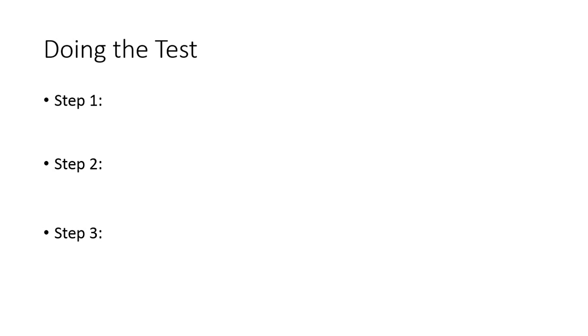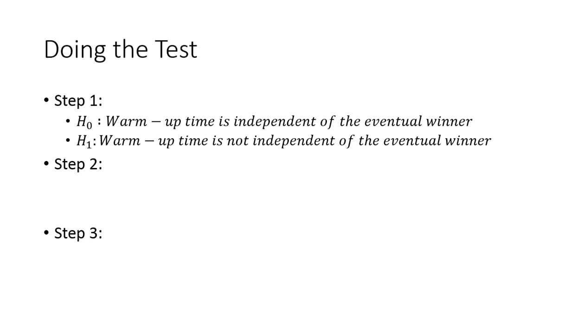So now we're going to use our hypothesis test. Now, this step one is slightly different, because instead of saying that they are, it's a distribution based on this, our null and alternative hypotheses are going to be mentioning specifically what we are seeing if they're independent of each other. So is warm-up time independent to the eventual winner, or to the winner? So that would be your H0. So your H0 is that they are independent. Your H1 is that they are not independent. So it's always independent for the null, not independent for the alternative.